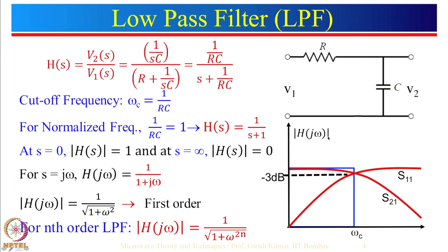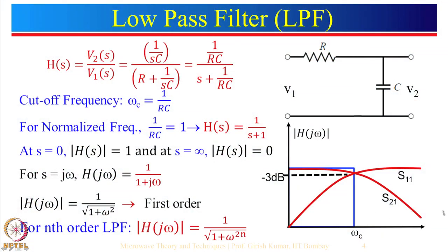Since we are designing at microwave frequencies, we represent transfer functions in terms of S-parameters: S21 represents the transfer function and S11 represents the reflection coefficient. The cutoff frequency omega_c corresponds to −3 dB (half power point). At microwave frequencies we do not use resistors but instead use inductors and capacitors, alternating L-C-L-C.